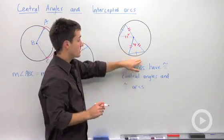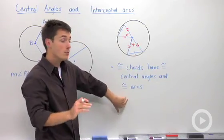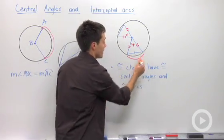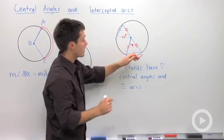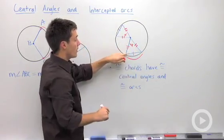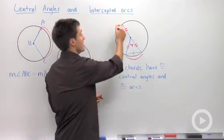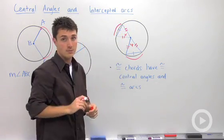One other consequence of this is that they also will have congruent intercepted arcs. So I could say that this arc right here, which is formed by that congruent chord, is congruent to that intercepted arc.